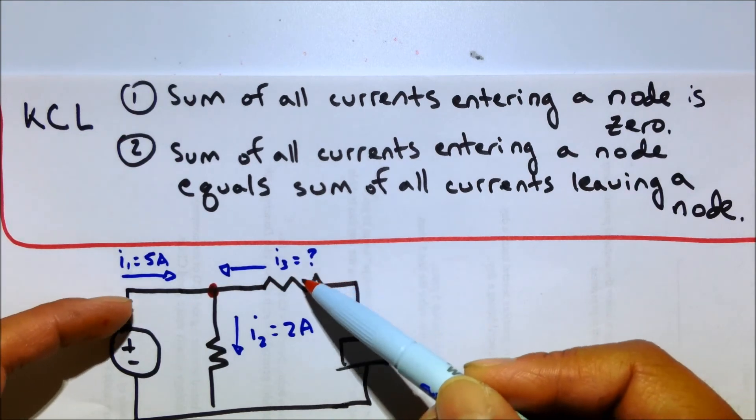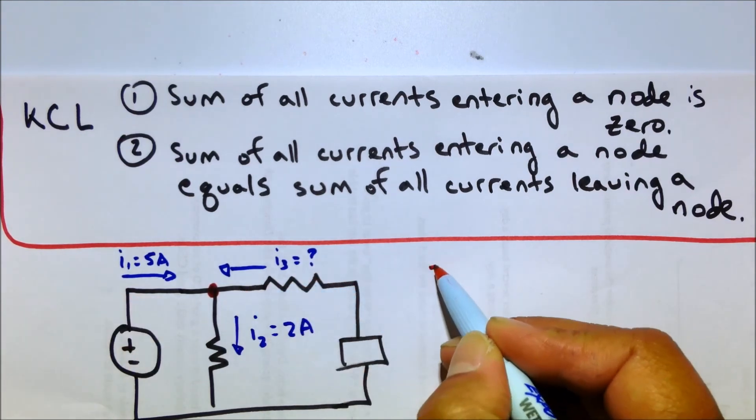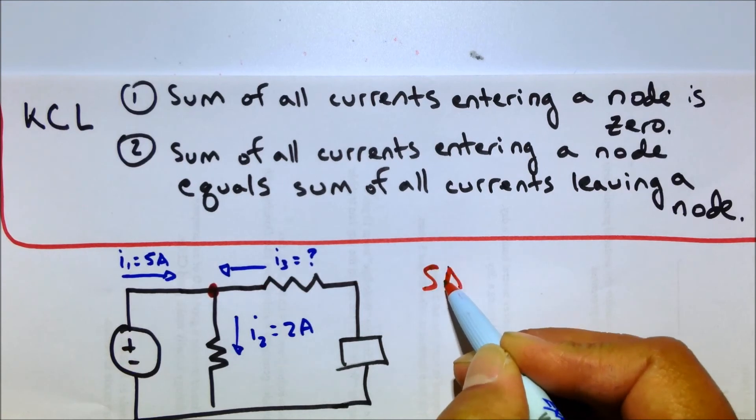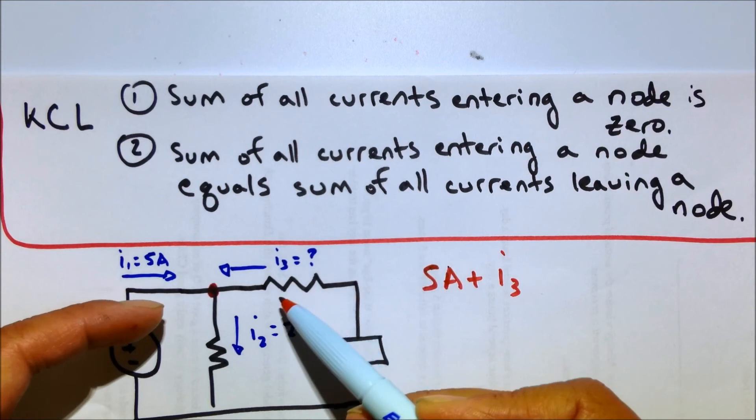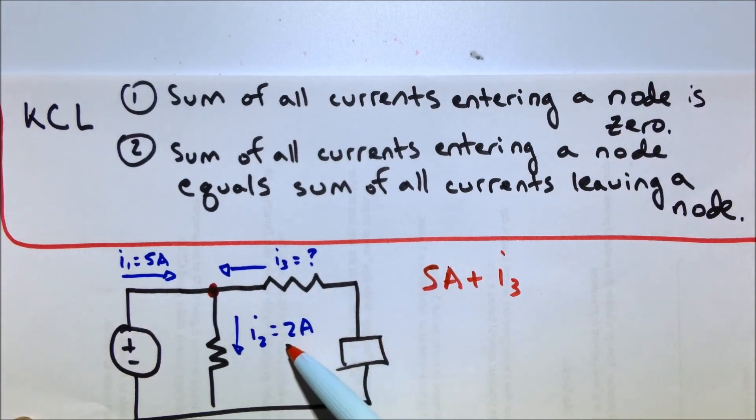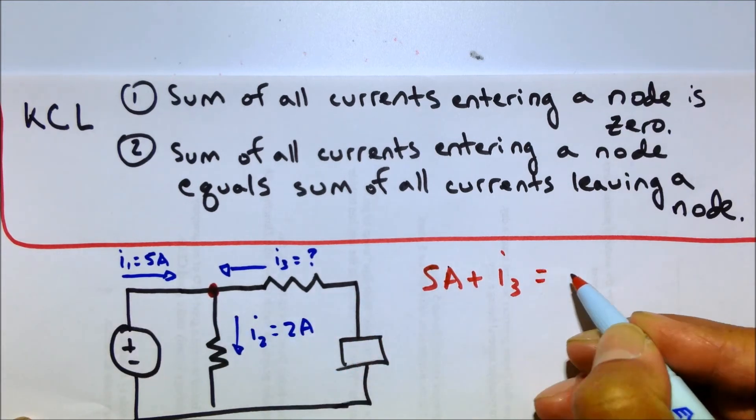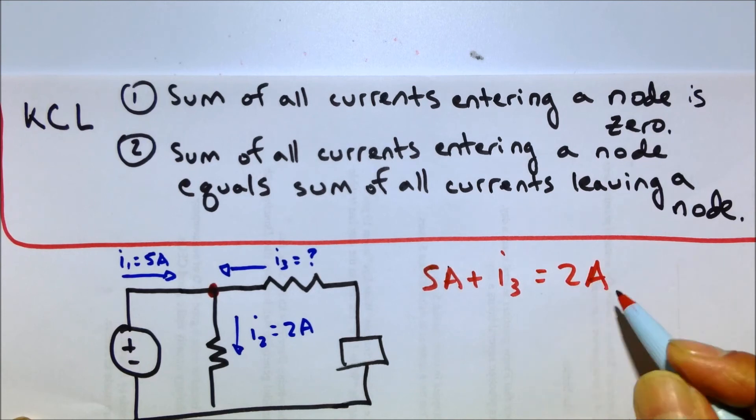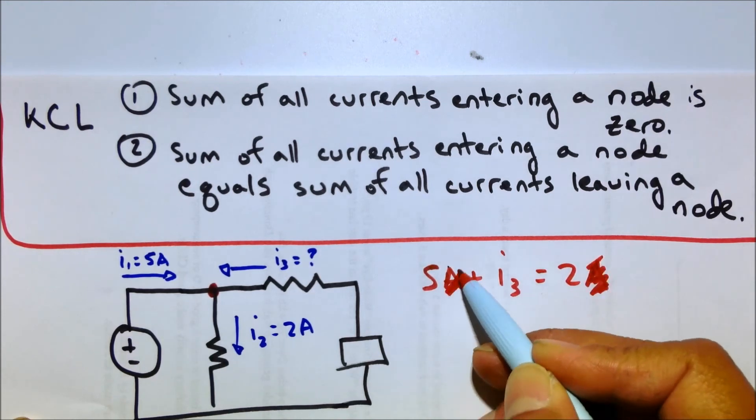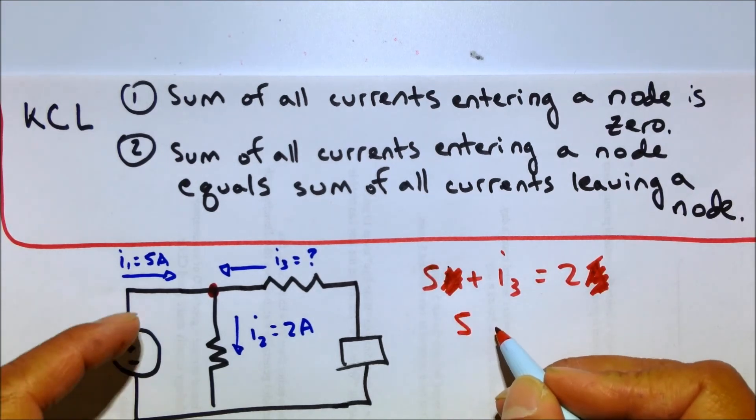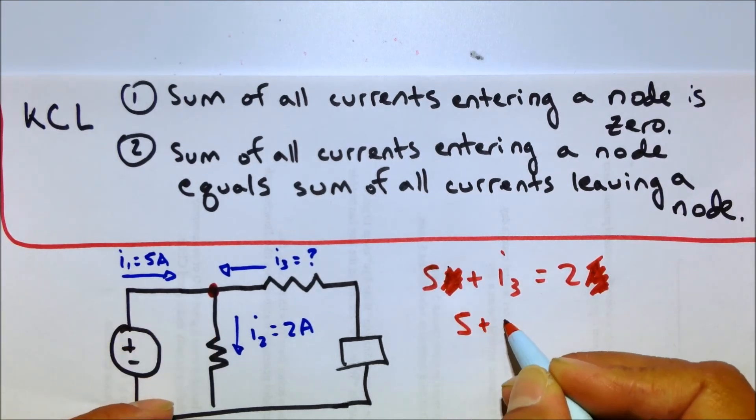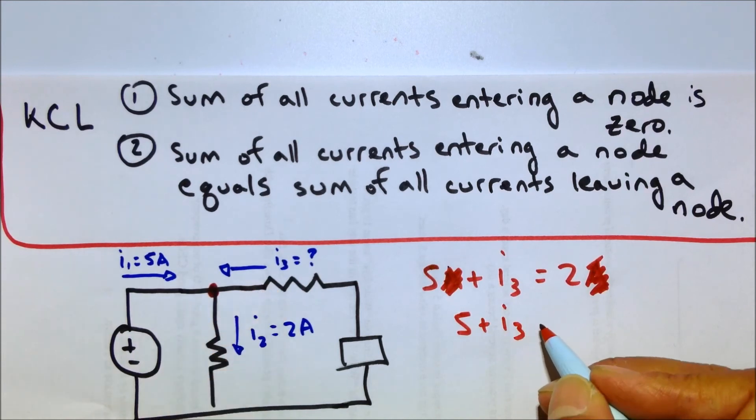So if we're going to say going this way is a positive current for that guy, then all the currents going into the node would be five amps plus I3, right? That's all the currents going into the node. And the current coming out is 2A, so that has to equal two amps. And I really shouldn't have put the amps in there. Confusing stuff. Okay, so just to make it cleaner, five amps going into it plus the I3 current going into it equals the two amps coming out of it.